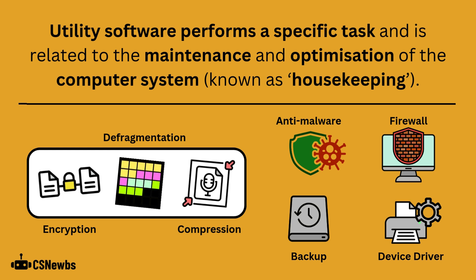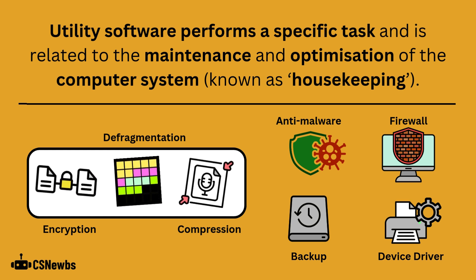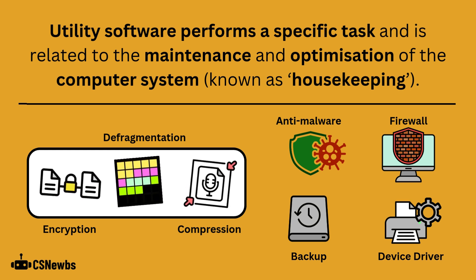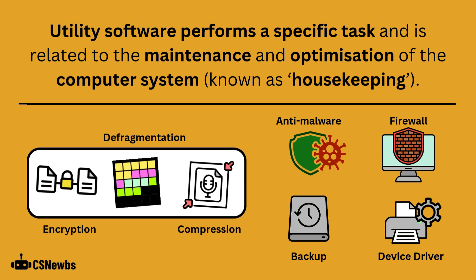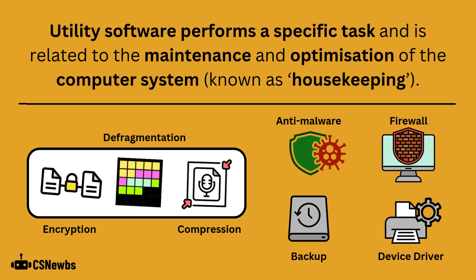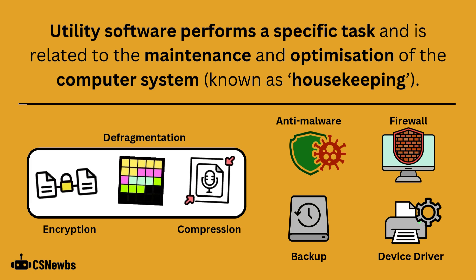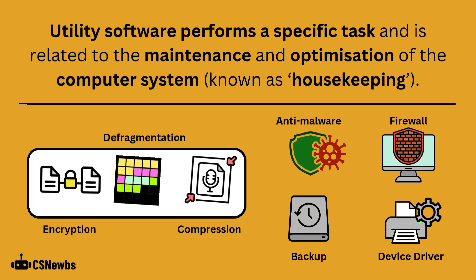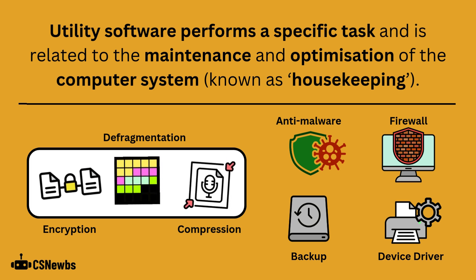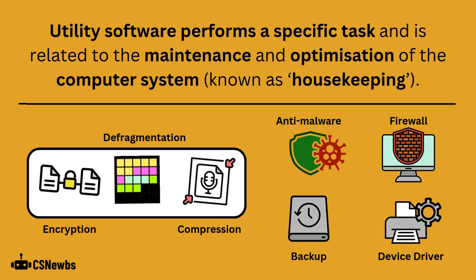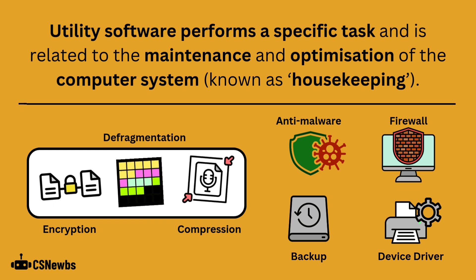Utility software performs a specific task and is related to the maintenance and optimization of the computer system. This is known as housekeeping. There are many different types of utility software, including anti-malware, firewall, backup, and device drivers. The J277 specification only lists encryption, defragmentation, and compression as the three you need to know.